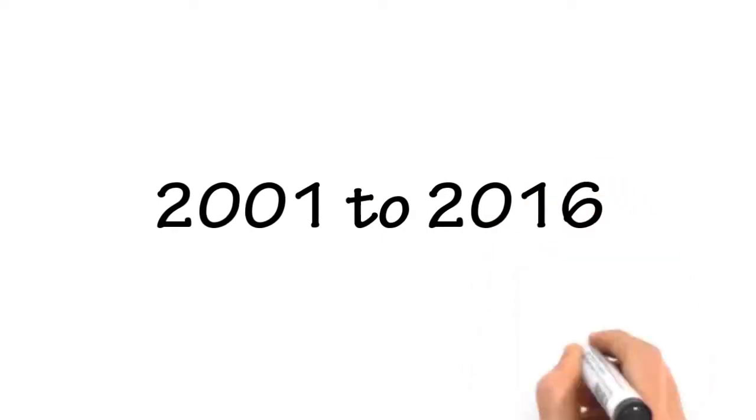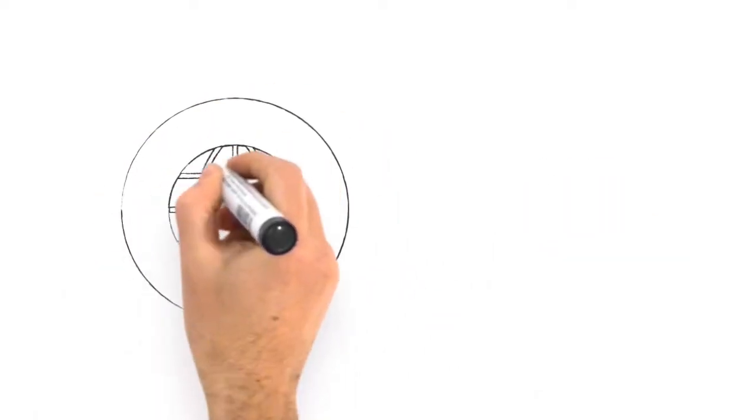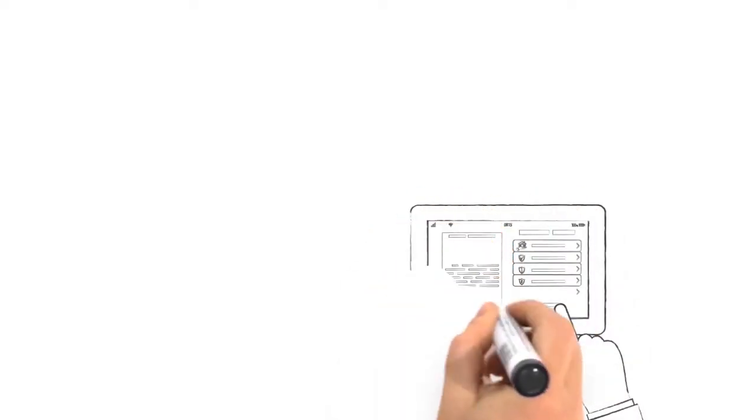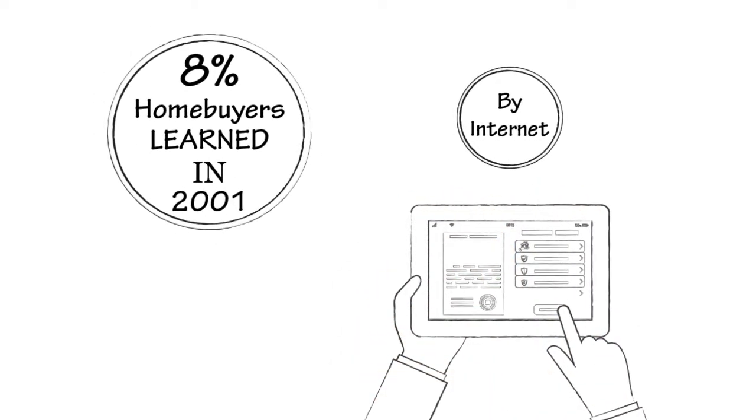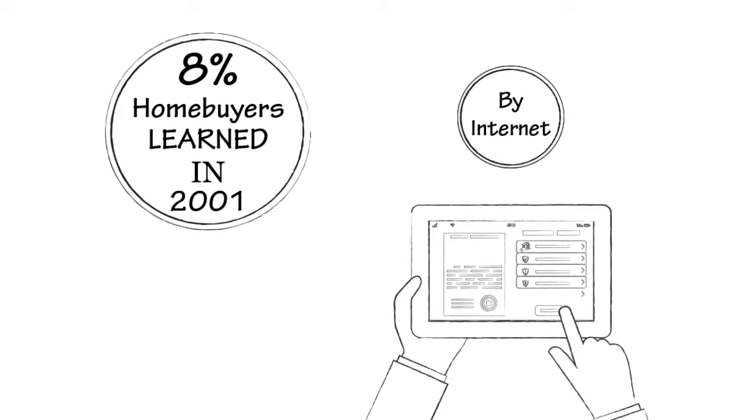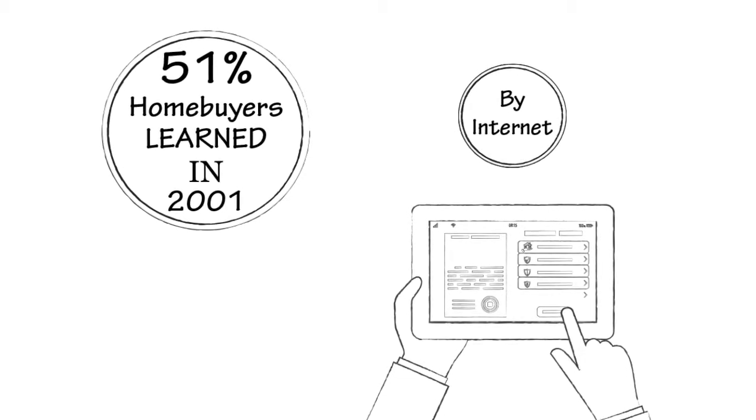From 2001 to 2016, the Internet became the prominent method of finding homes. When asked in 2001 how they first learned about the home they purchased, 8% of homebuyers said the Internet. By 2016, 51% answered this way.